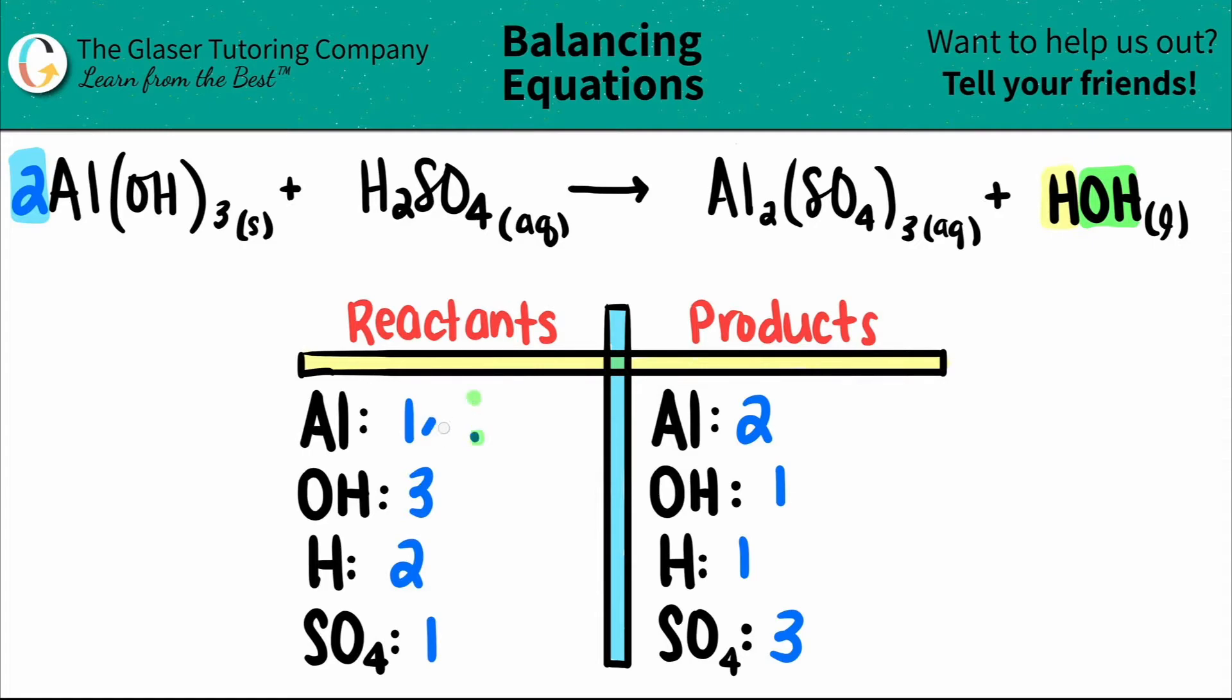But now you have to be fair. If you put a coefficient in front of a compound, it has to be distributed between, in this case, the aluminum and the polyatomic hydroxide. So both of these numbers are going to change. So I have two aluminums, which is what I wanted. And now I have two times three hydroxides. Two times three is now a total of six hydroxides.